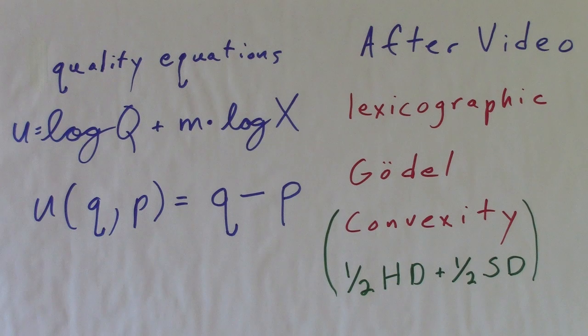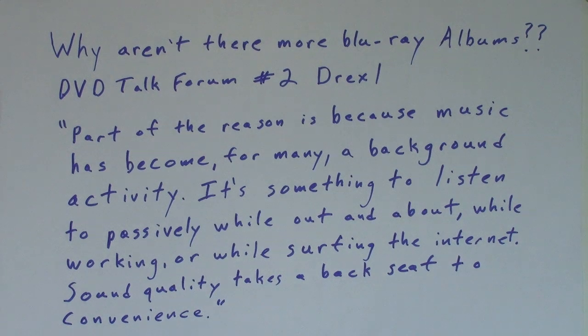After the video, a few wrote about lexicographic preferences, someone mentioned Gödel, and some added fractions of TVs to show that convexity holds. Why aren't there more Blu-ray albums? Good question.